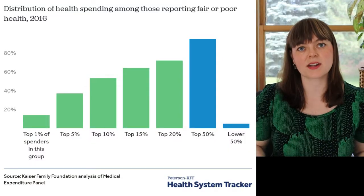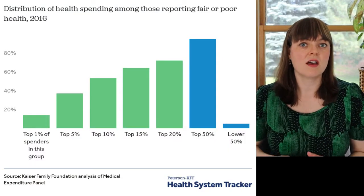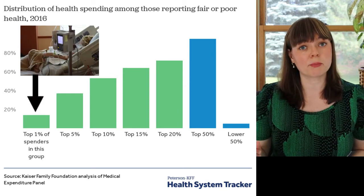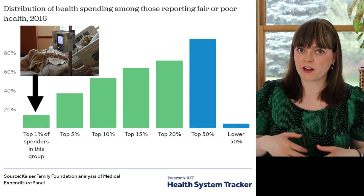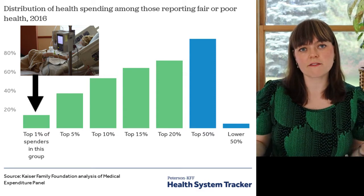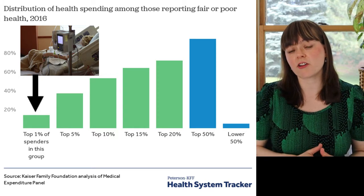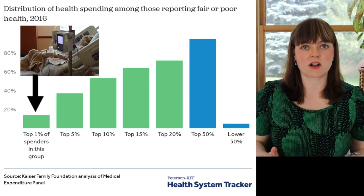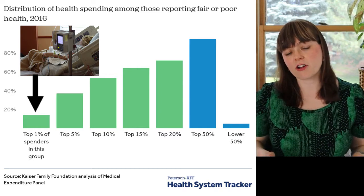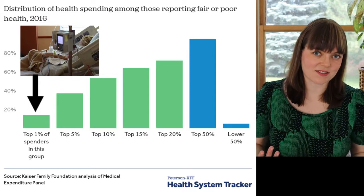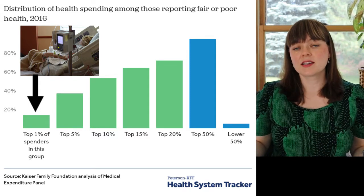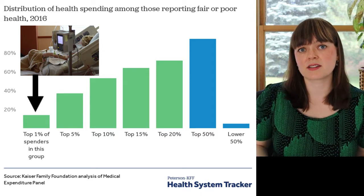The first thing you need to understand is the way that healthcare spending is distributed across the population. There's a small number of really sick people who consume the greatest number of healthcare dollars. You can see this graph: about 22% of healthcare dollars go toward people who are the sickest 1% of the population, about half of healthcare dollars go toward the sickest 5%, and the bottom 50% — the healthiest people — spend only about 3% of healthcare dollars.